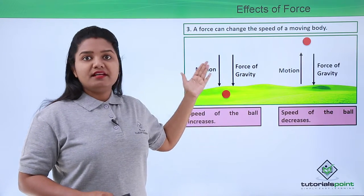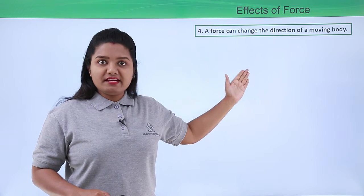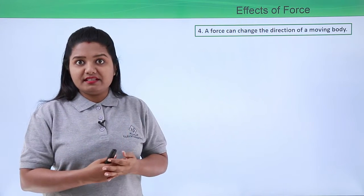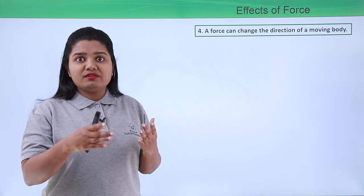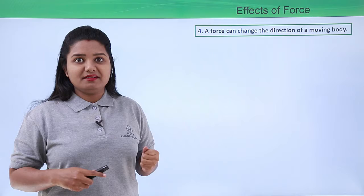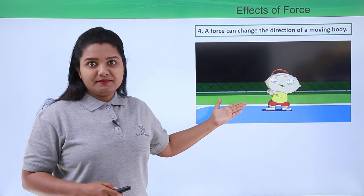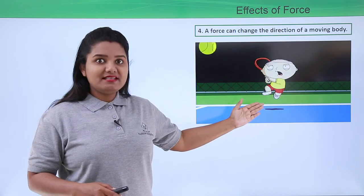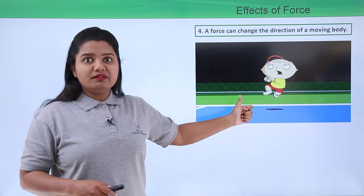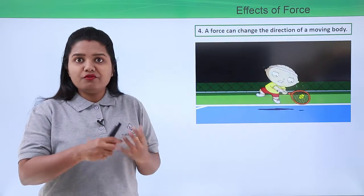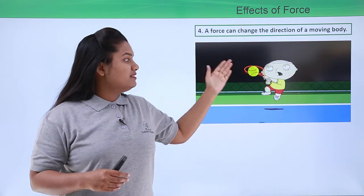That covers the third effect of force. The fourth effect is that a force can change the direction of a moving body. If a body is moving in a particular direction and we want to change its direction, some force must come into play — otherwise it will continue moving in the same direction forever. For example, when a tennis ball strikes a racket, the racket applies a force on the ball, causing it to change direction and move back toward the opposite team.